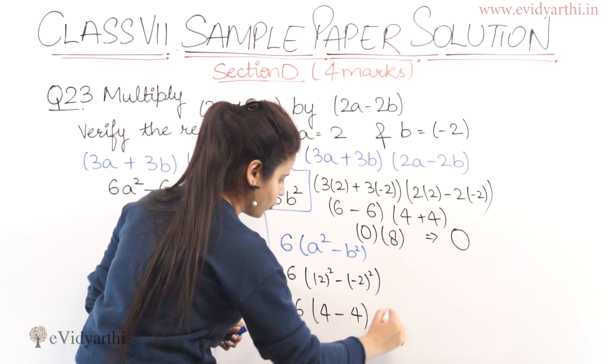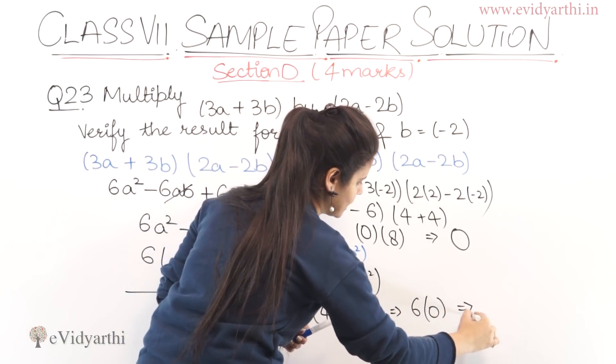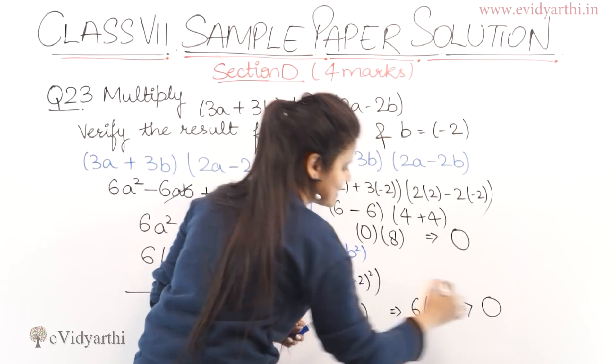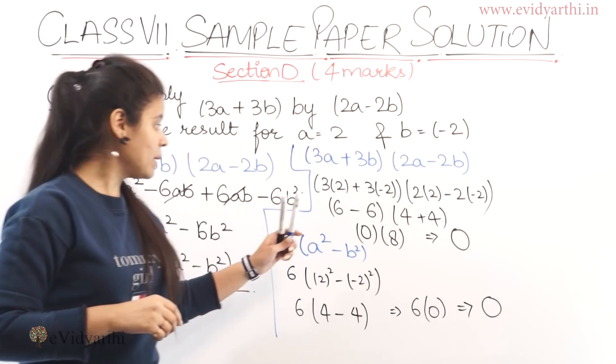So this becomes 4. What value did we get? 6. And 4 minus 4 is 0. So 6 into 0 is 0. Multiplying these also gives zero when we put the values.